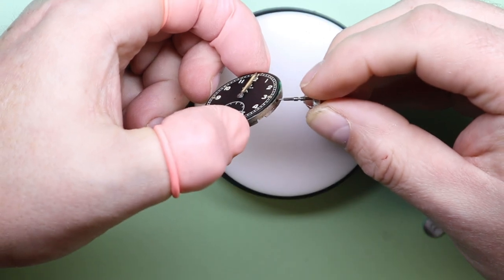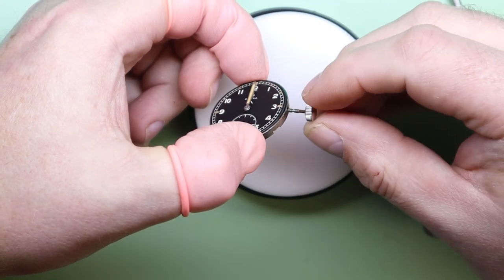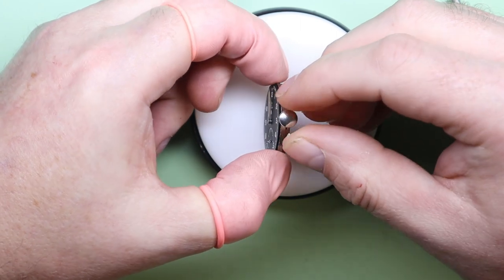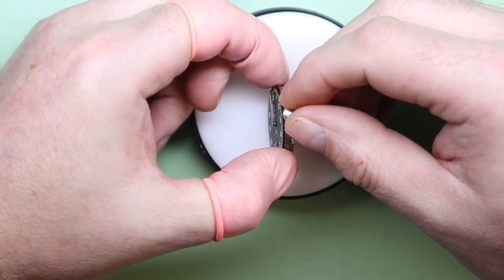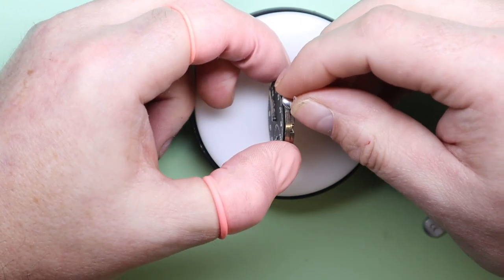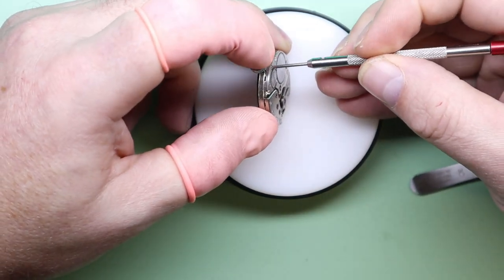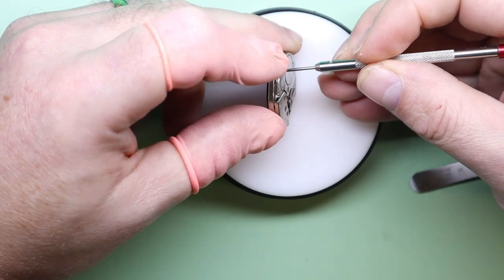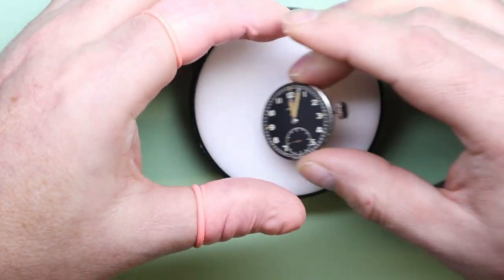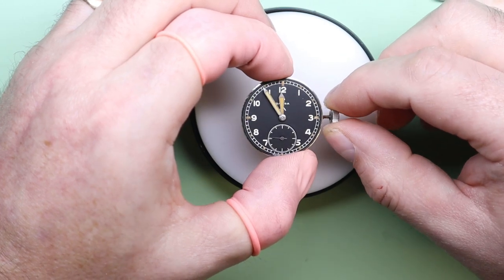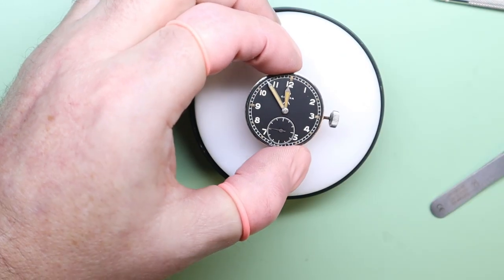We're going to replace the stem back into the movement before we remove the hands. Now the trick with replacing the stem in this movement is to put enough pressure on the setting bolt that it pushes the setting lever on the other side out of the way so that you can put the stem in, but sometimes it doesn't always want to play ball, but we get there in the end.